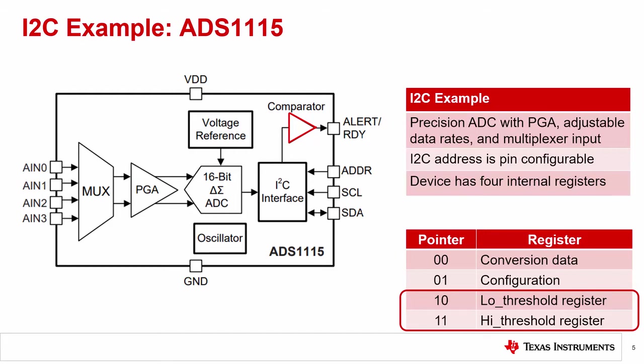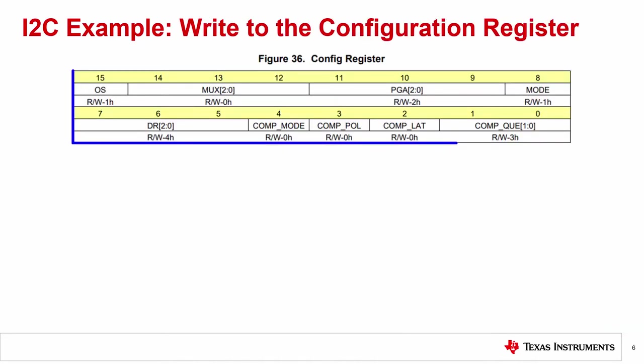Once the conversion data goes beyond these thresholds, they can set an alert in the alert/ready pin. For this example, we'll start with looking at the settings for the configuration register and using the I2C protocol to program the device. The ADS-1115 has a 16-bit configuration register.